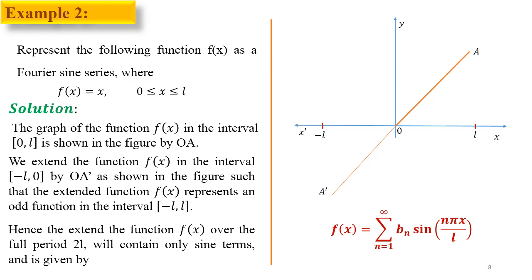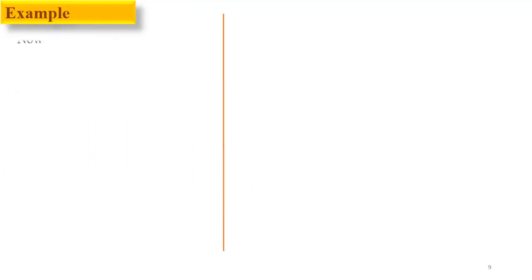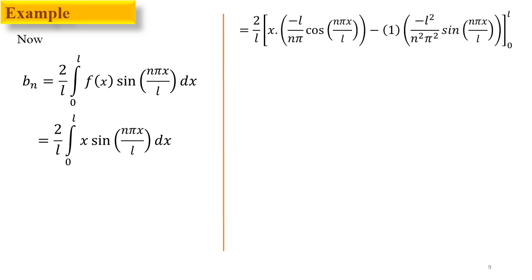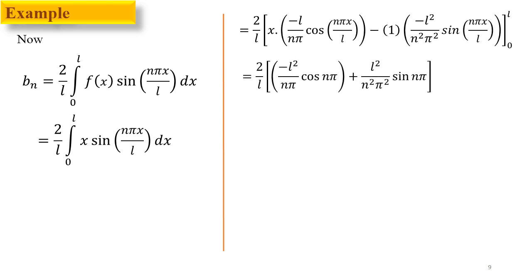We need to find bₙ using the formula: bₙ = (2/L)∫₀ᴸ f(x)sin(nπx/L)dx. Substituting f(x) = x and applying integration by parts gives: (2/L)[x·(−L/nπ)cos(nπx/L) + ...]₀ᴸ. Applying the limits: sin(nπ) = 0 and cos(nπ) = (−1)ⁿ. Finally, bₙ = (2L/nπ)(−1)ⁿ⁺¹.